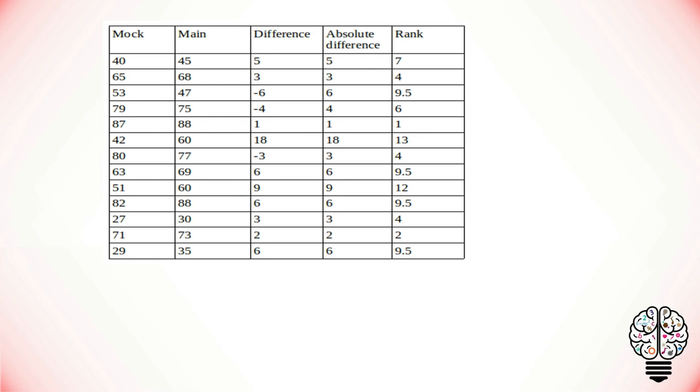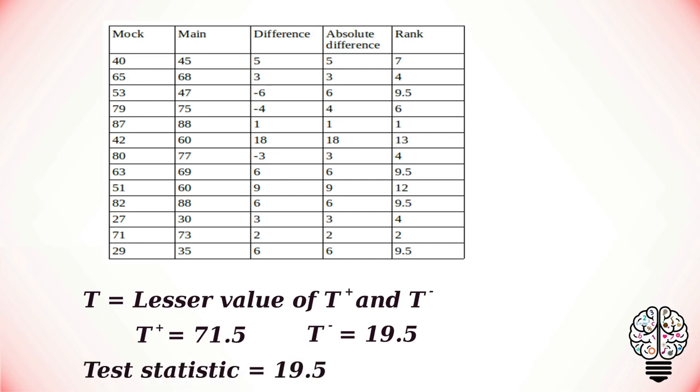Now that we have ranked our values, the next step is calculating the ranks of positive and negative values. In our case there are three negative values in the difference. The rank corresponding to those three values are 9.5, 6, and 4, adding that we get 19.5. Adding the values of the rank corresponding to the positive values we get 71.5. Our test statistic is the lesser of these two values, so 19.5 is our test statistic.